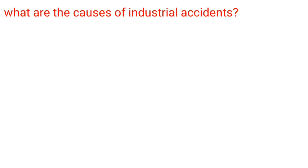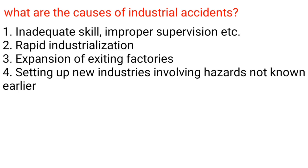What are the causes of industrial accidents? 1. Inadequate skill and improper supervision. 2. Rapid industrialization. 3. Expansion of existing factories. 4. Setting up new industries involving hazards not known earlier.